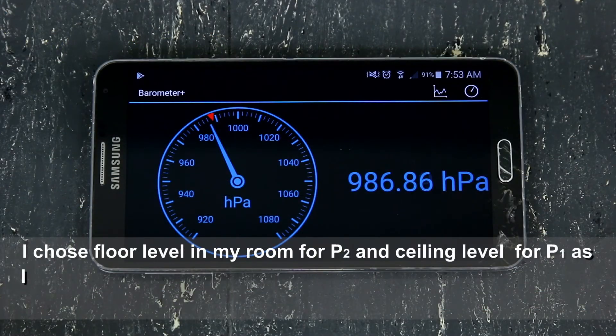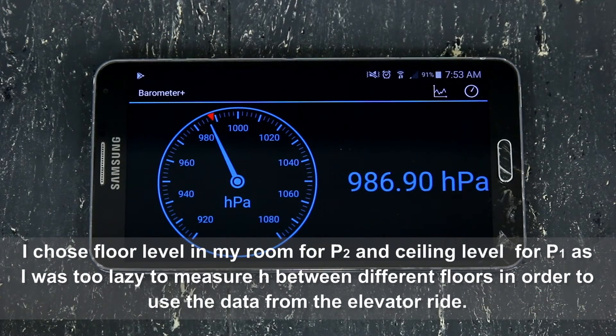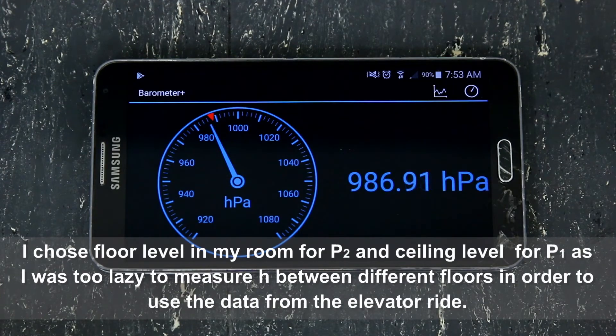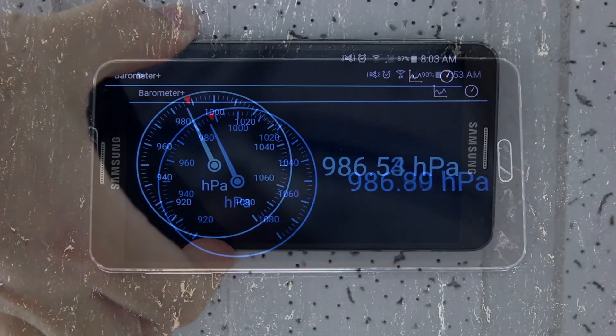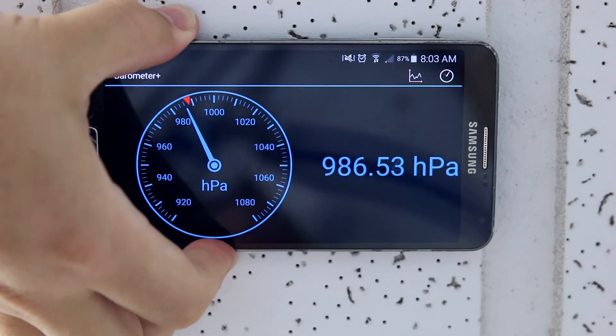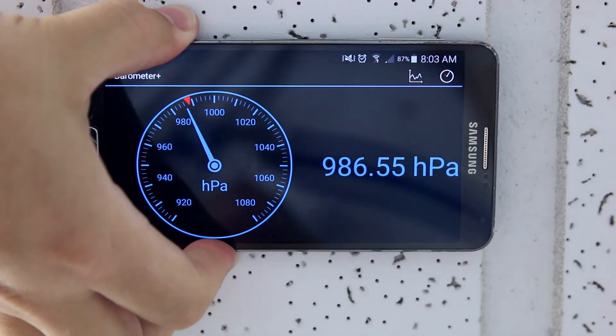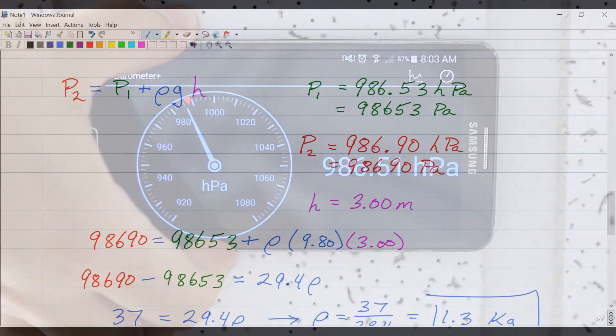So here I place my phone directly on the floor for P2, the pressure at the lower level. There's some subjectivity to the reading because the reading does jump around a little bit, but I'm going to read that as 986.90 for P2. And here I place the phone directly against my ceiling, so this is P1. Again, I'm going to read that with some guesstimating here, 986.53.